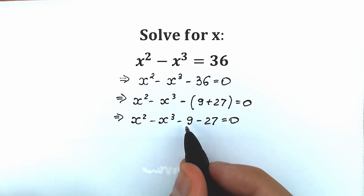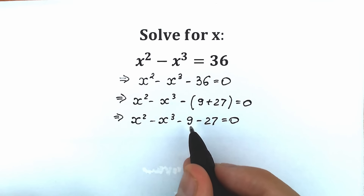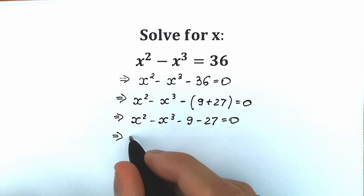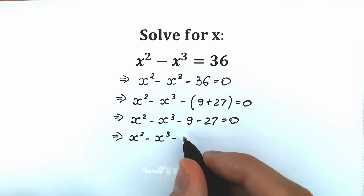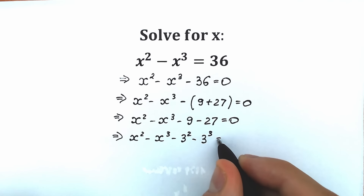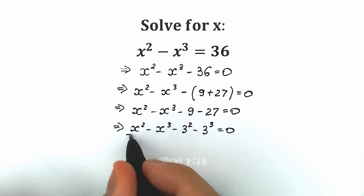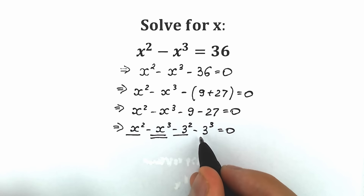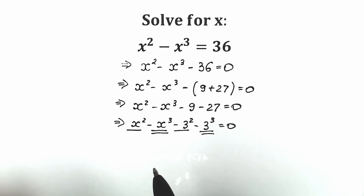Now, 9 equals 3 squared, and 27 equals 3 cubed. It's really great to express these values as a square and as a cube. So we have x squared minus x cubed minus 3 squared minus 3 cubed equal to 0. If we look closely, we have x squared and 3 squared — we can group them — and we have x cubed and 3 cubed — we can also group those expressions.